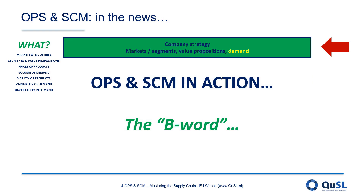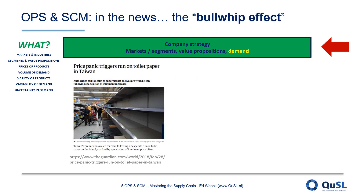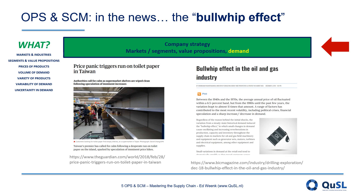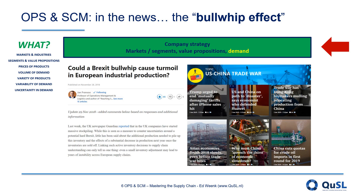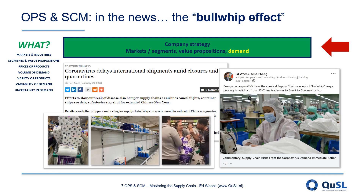Even though the use of the expression bullwhip itself is often limited to people from the supply chain area, its effects frequently appear in the news. Sometimes it appears in relation to very ordinary products, sometimes in relation to global commodities, sometimes it is even connected to political issues. And more recently we have seen how the bullwhip works if a global pandemic is at play.